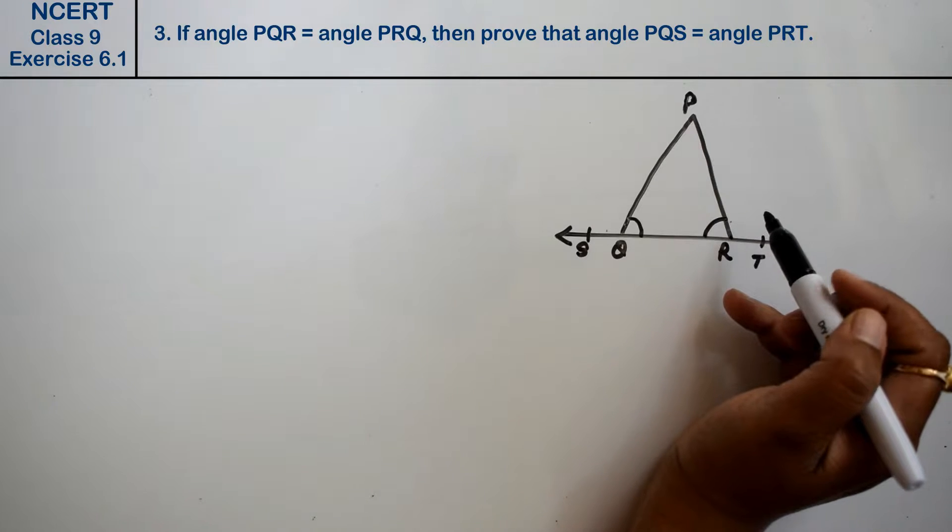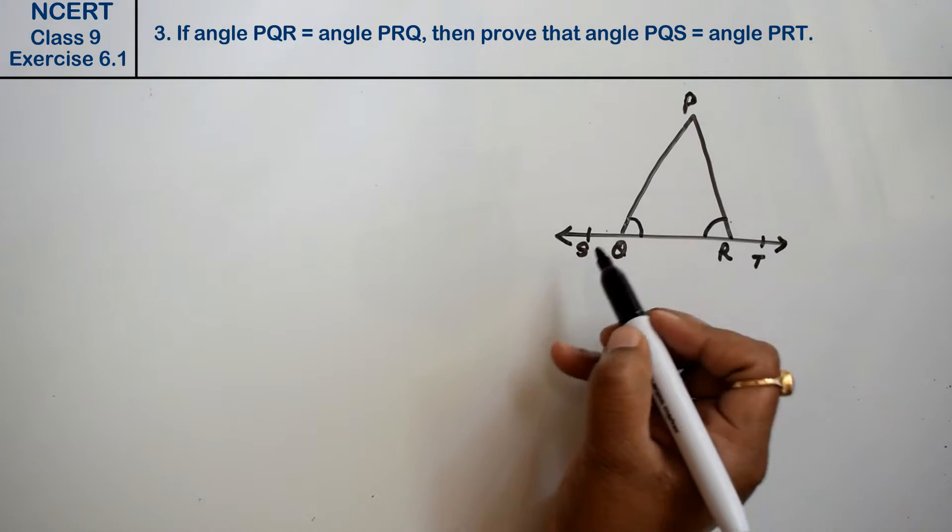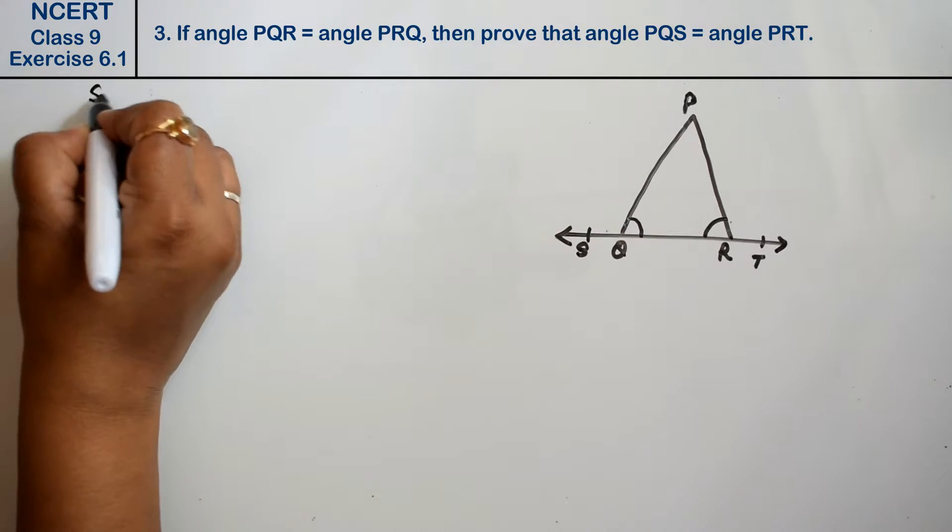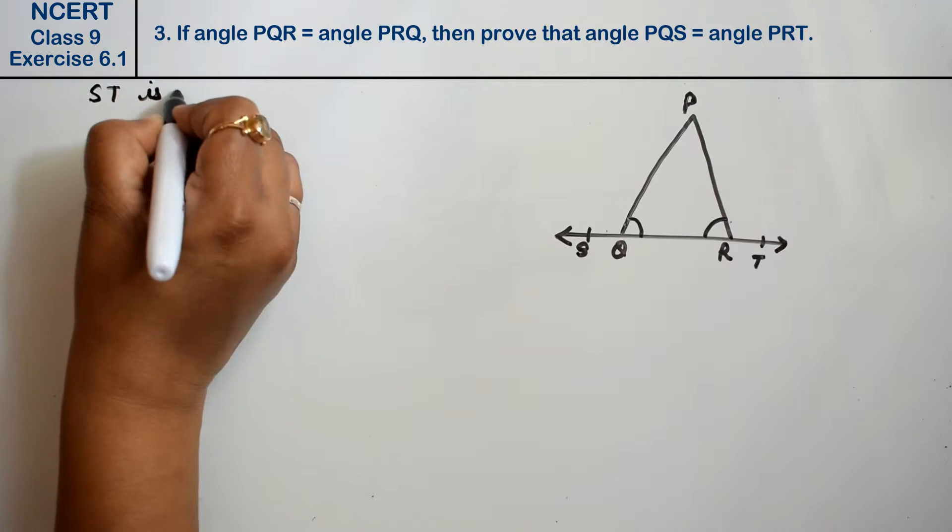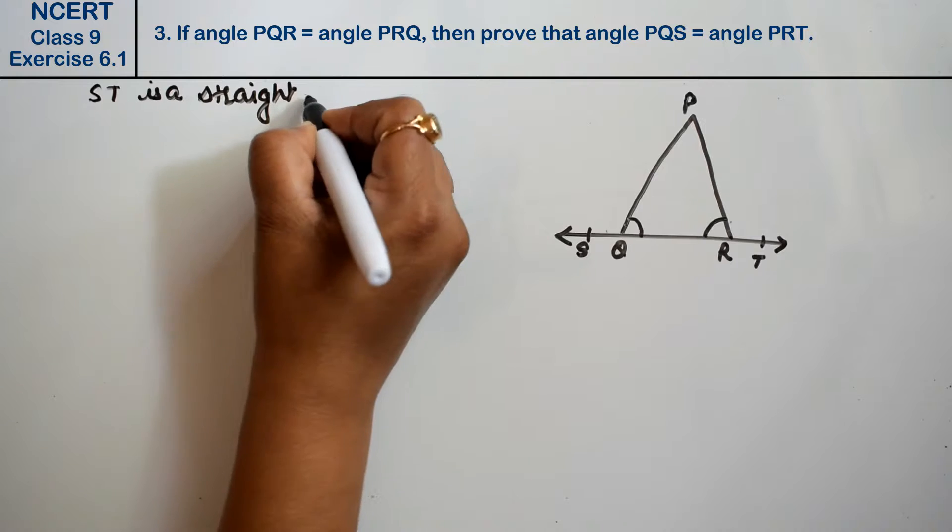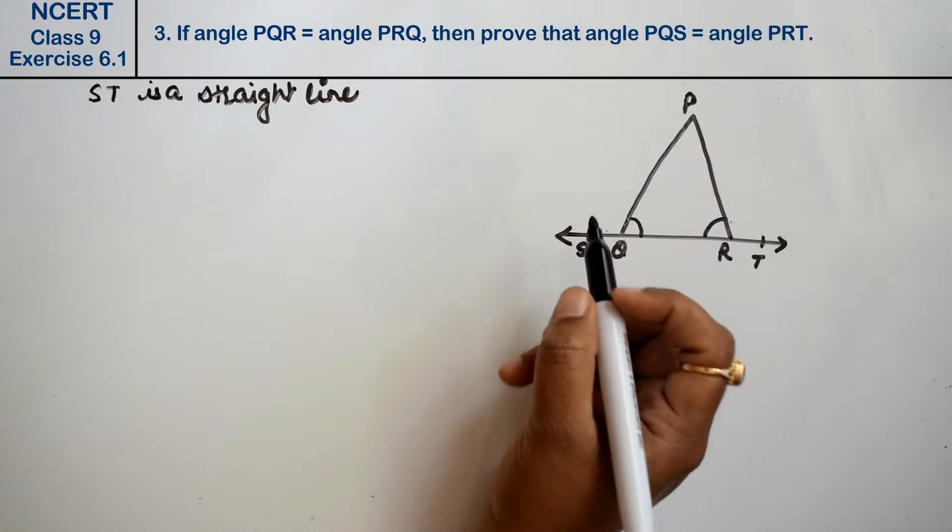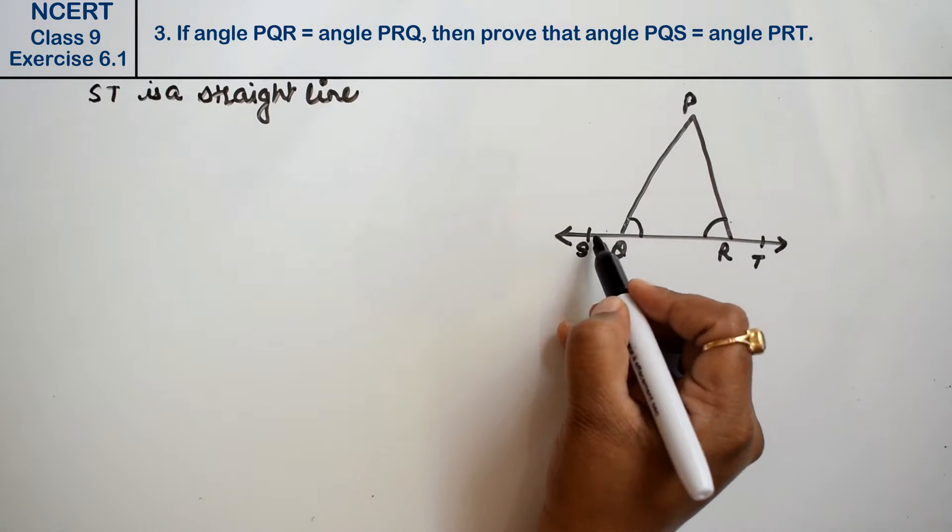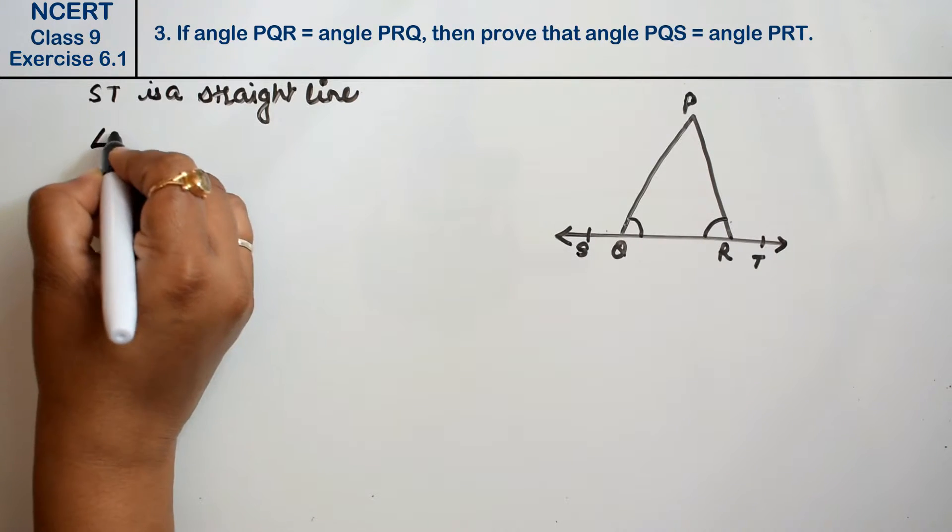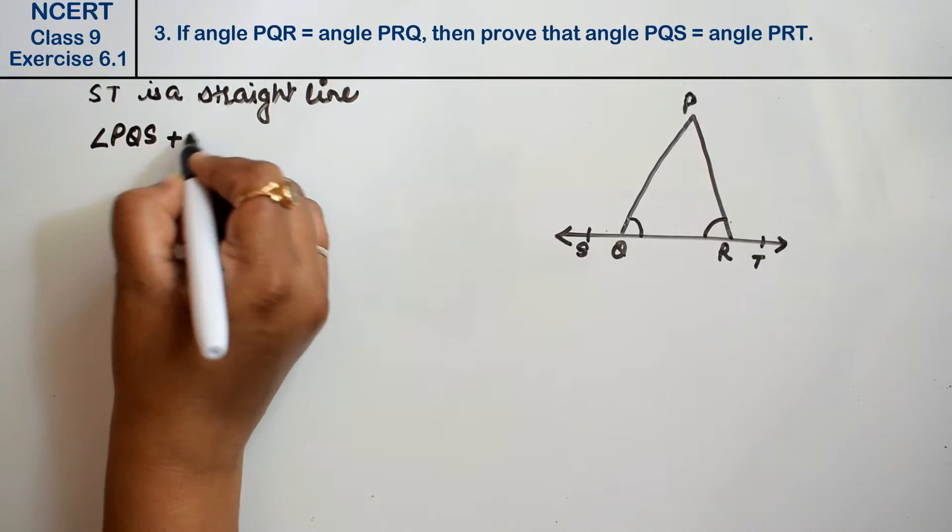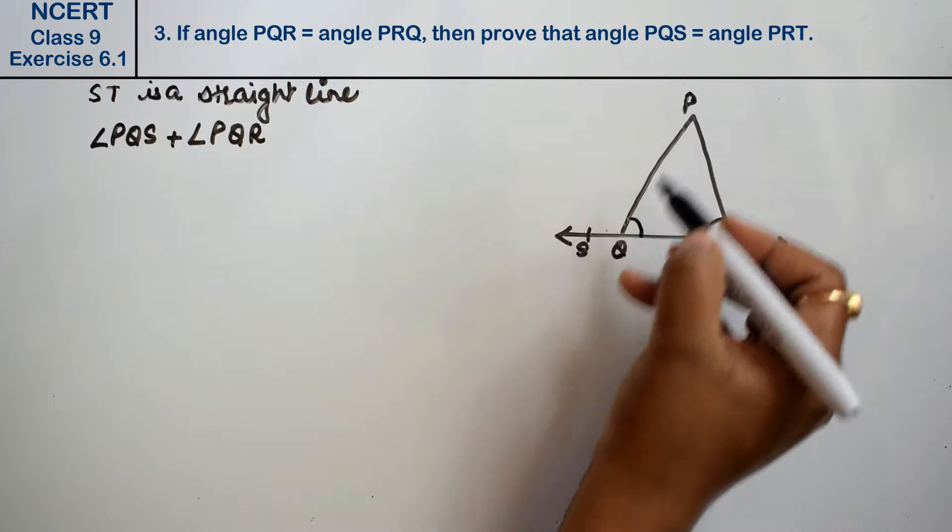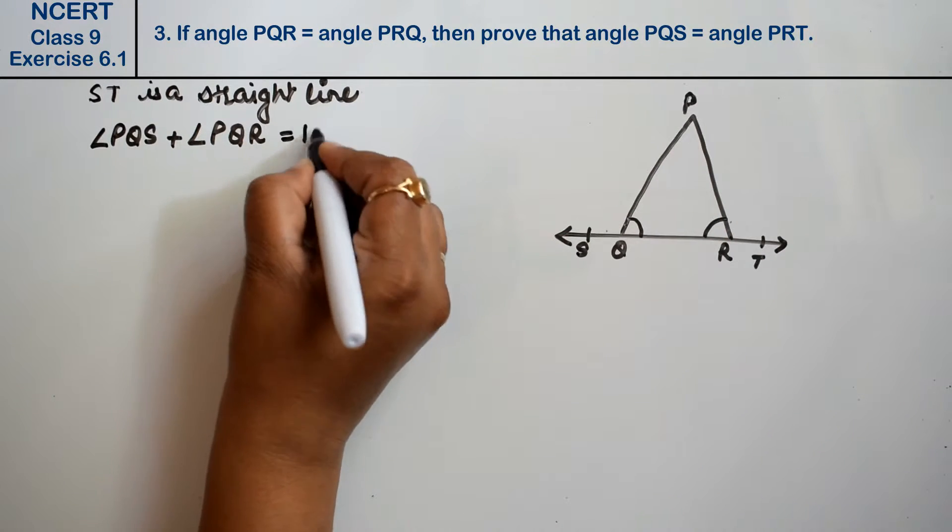So how do we prove that? We know that ST is a straight line. Now, if ST is a straight line, then angle PQS plus angle PQR equals 180 degrees.